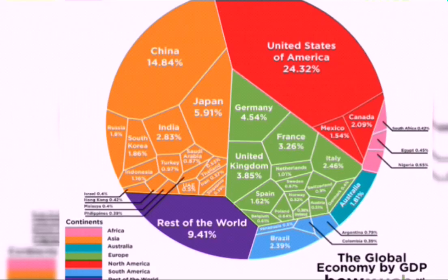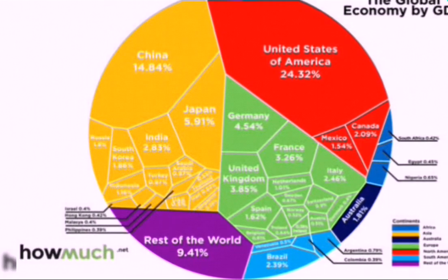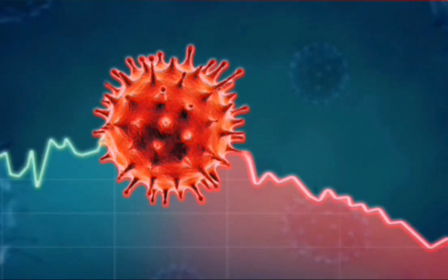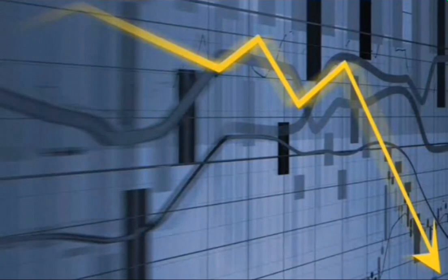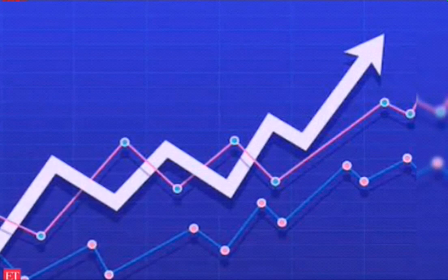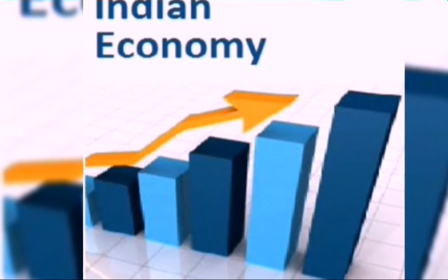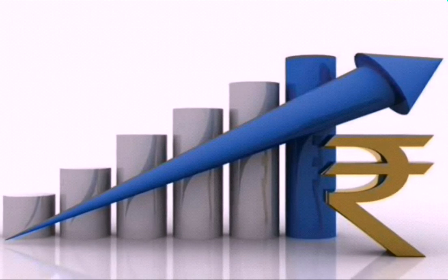India so far has committed 23 billion, 0.7% of GDP in the form of health insurance for health workers, cash transfers, free food and gas distributions. However, looking at the extent of impact and the support other countries have provided, it's likely a second large stimulus will be necessary for India to prevent significant collapse of small businesses.